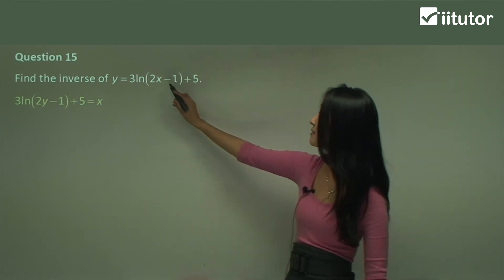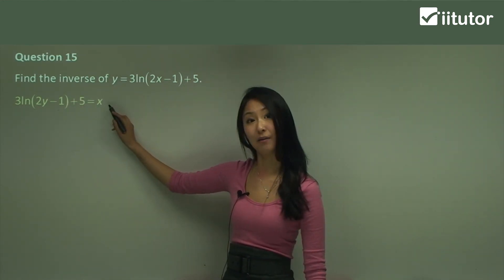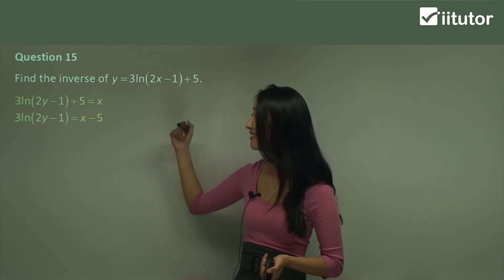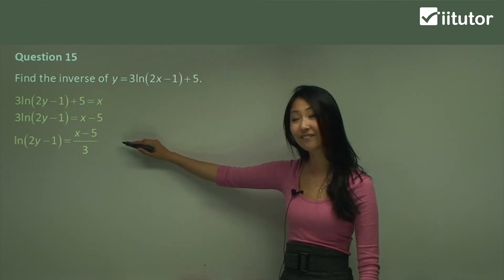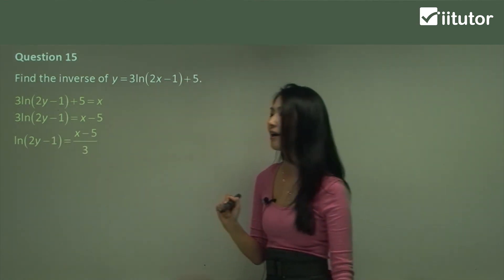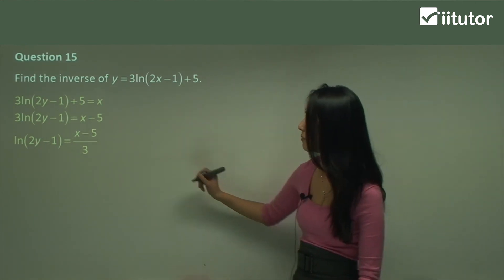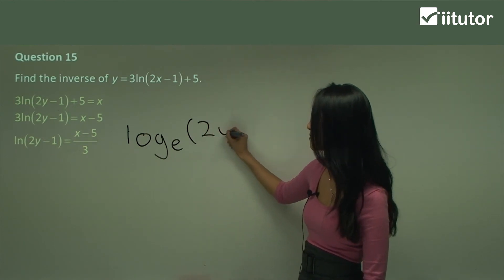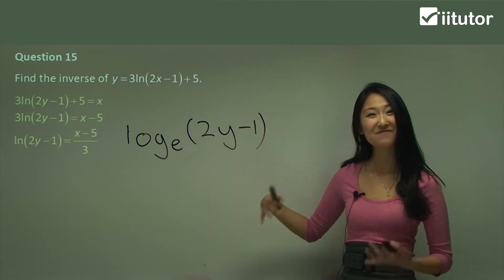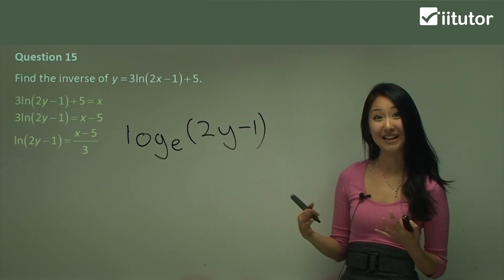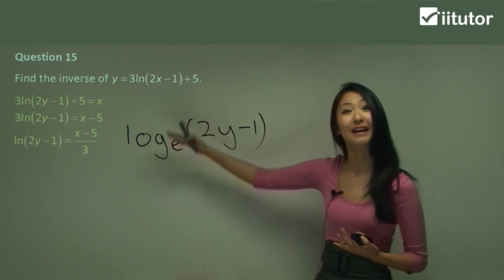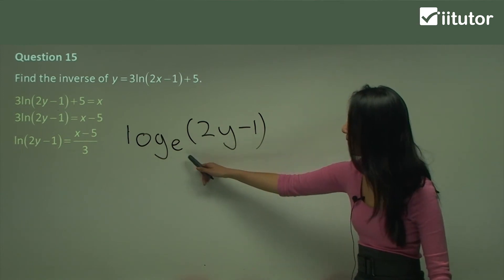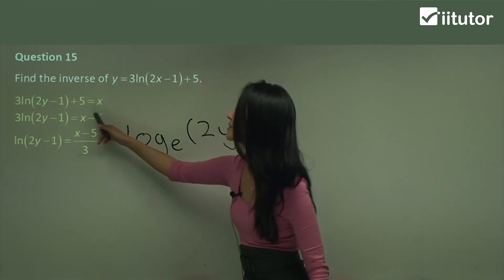First, switch x and y, so x equals 3 ln(2y minus 1) plus 5. Working from the outside in: first move 5 to the other side, then divide both sides by 3, leaving ln(2y minus 1). Now remember that ln is actually log base e. Writing it as log base e makes it clearer — we want to remove it from log form and change it back into index form, which is what we did in the previous question.